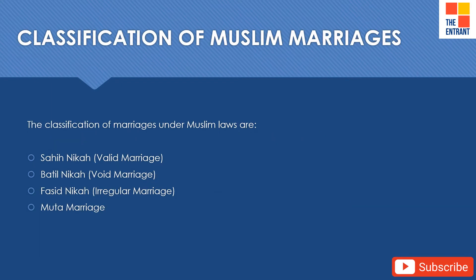Muslim marriages can be broadly classified into four types: sahi nikah or a valid marriage, batil nikah or a void marriage, fasid nikah or an irregular marriage, and muta marriage which is a pleasure marriage.